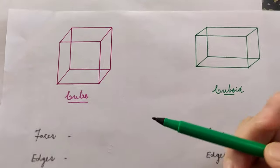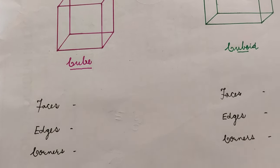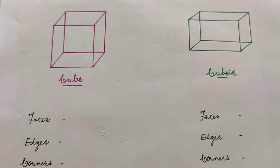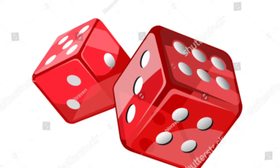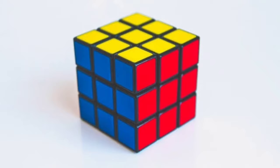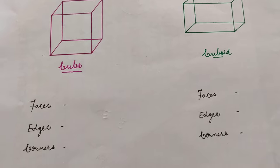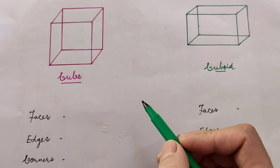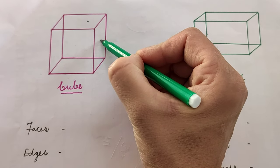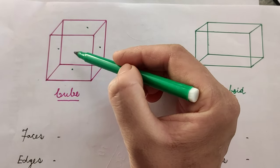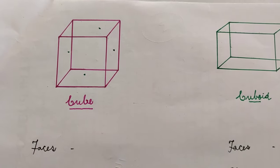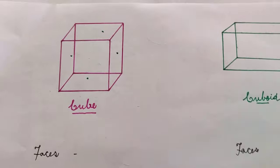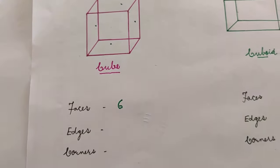In a cube, how many faces, edges, and corners are there? Examples of a cube include dice — which you use in ludo or snake and ladder games — and a puzzle cube. Now let's count the faces of a cube: one, two, three, four visible faces, but if you look at the actual object there are six faces in total — two more are at the back and not visible here.